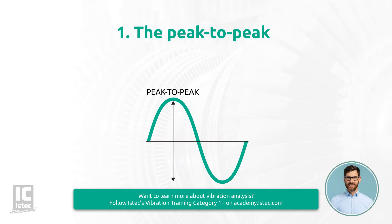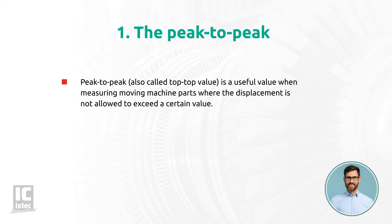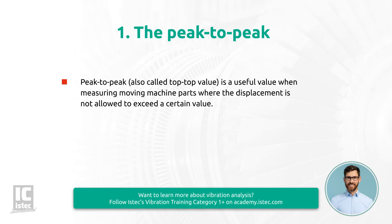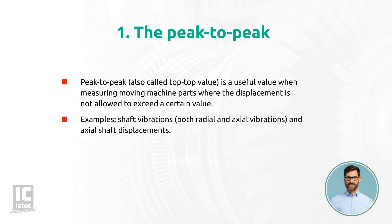The peak-to-peak value indicates the difference between the maximum positive and maximum negative amplitudes of a vibration waveform. This is a useful value when measuring moving machine parts where the displacement is not allowed to exceed a certain value, as this will result in mechanical stresses or machine damage. Examples of this are shaft vibrations — both radial and axial vibrations — and axial shaft displacements.